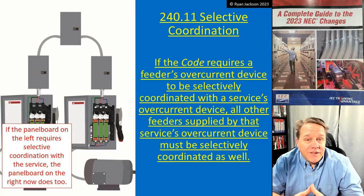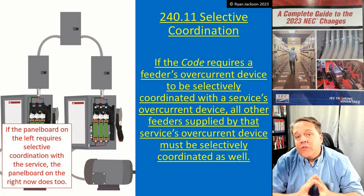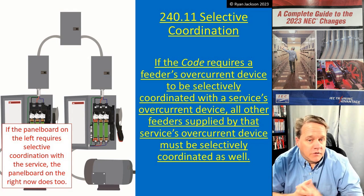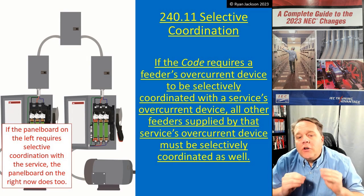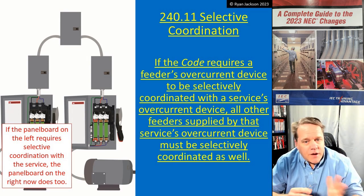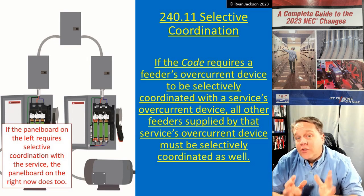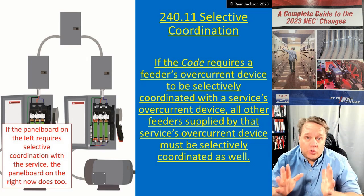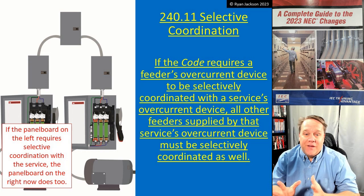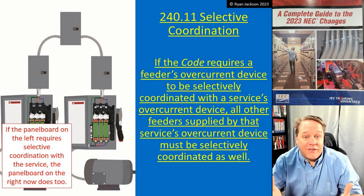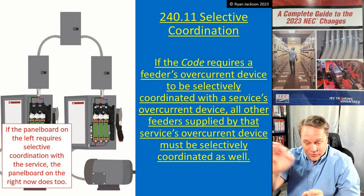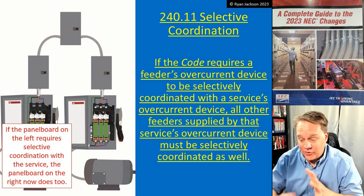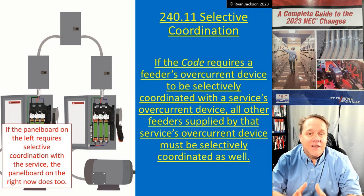240.11 says: if the code requires a feeder's overcurrent device to be selectively coordinated with a service's overcurrent device, then all other feeders supplied by that service's overcurrent device must be selectively coordinated as well. You have to draw this out or it's not going to make sense - hats off to the guys on the code making panel, because writing that in a way that actually makes sense is not easy.